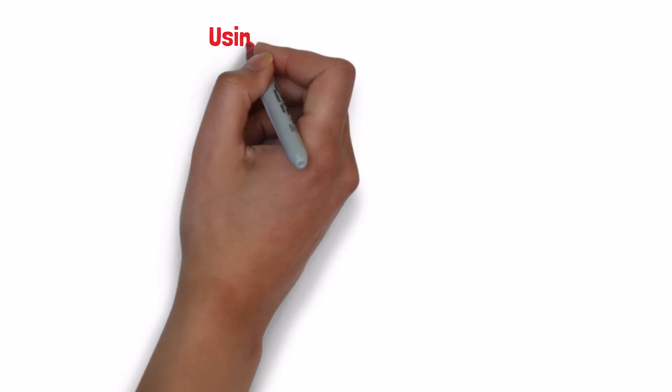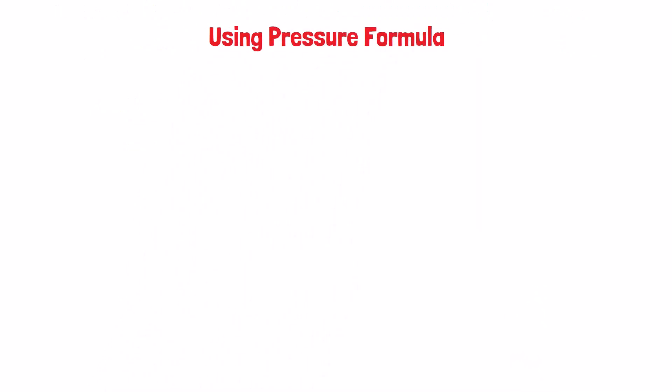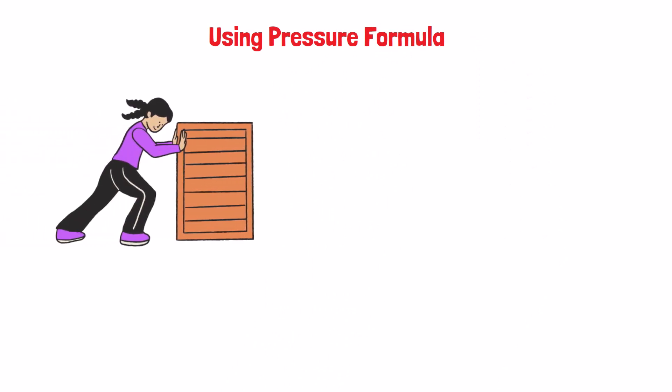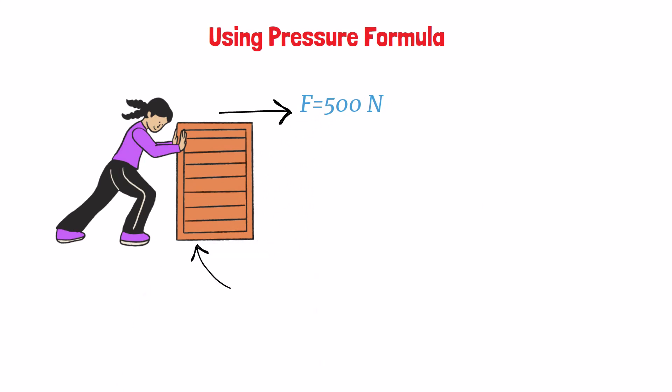Let's put the pressure formula into action. Say you are pushing a box on a floor with a force of 500 N, and the bottom area of the box is 2 m². Remember, our formula is pressure equals force divided by area.